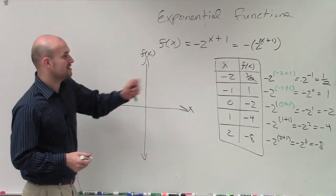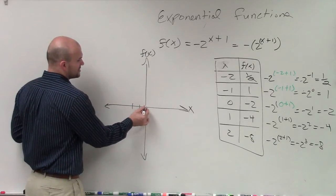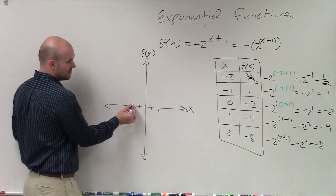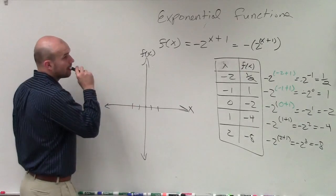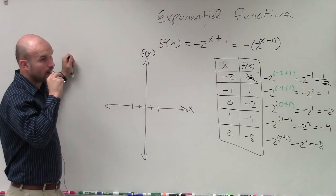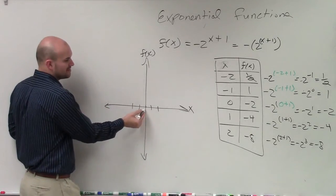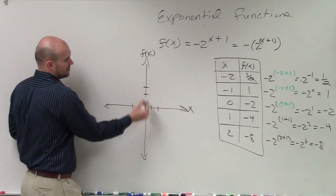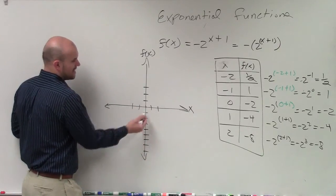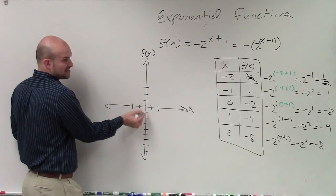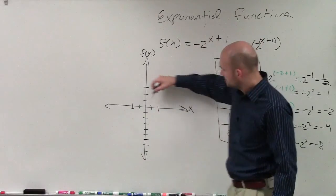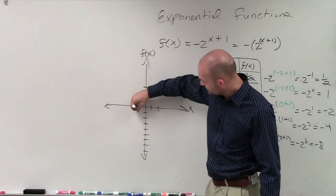So what we do is we look at this, and I say at negative 2, so negative 2, 0, 1, 2. At negative 2, I'm up to 1 half, which is halfway between 0 and 1. At negative 1, we're at 1. So at negative 1, we're down to 1.